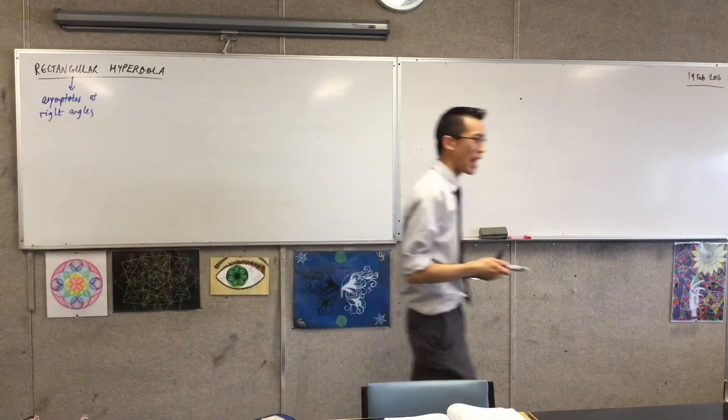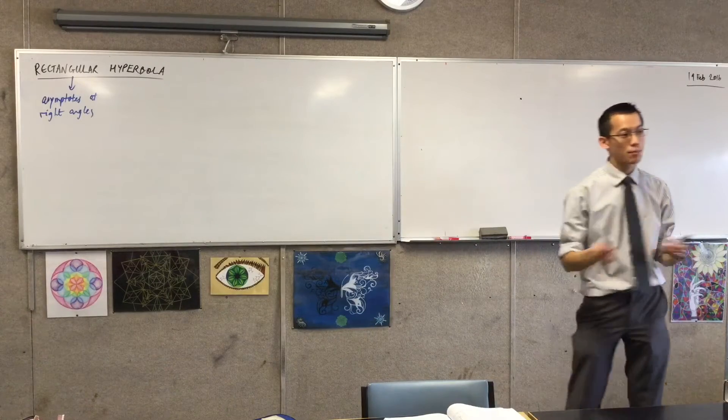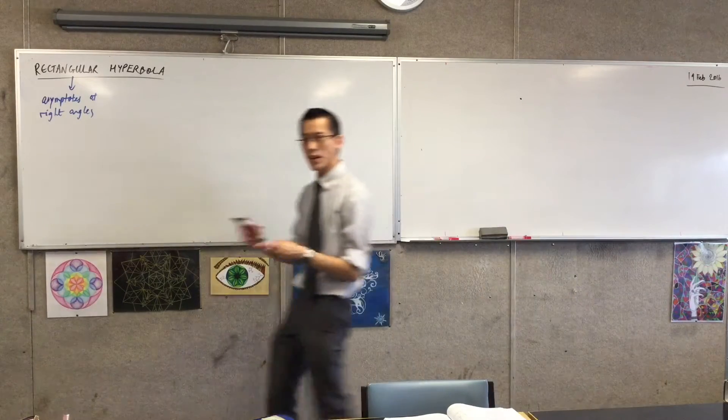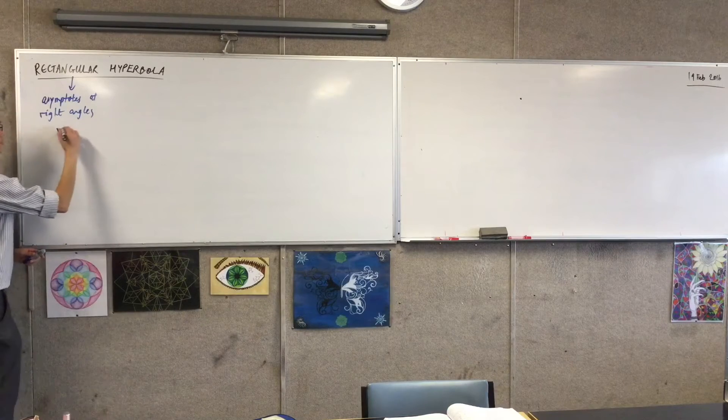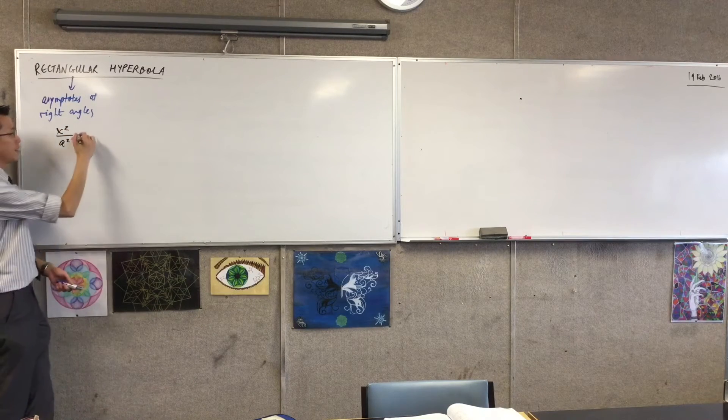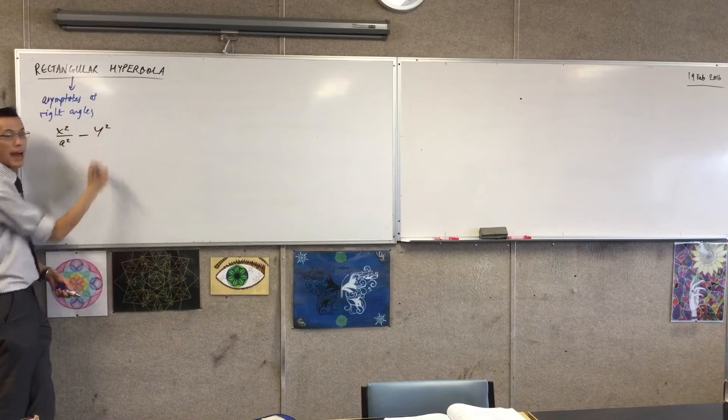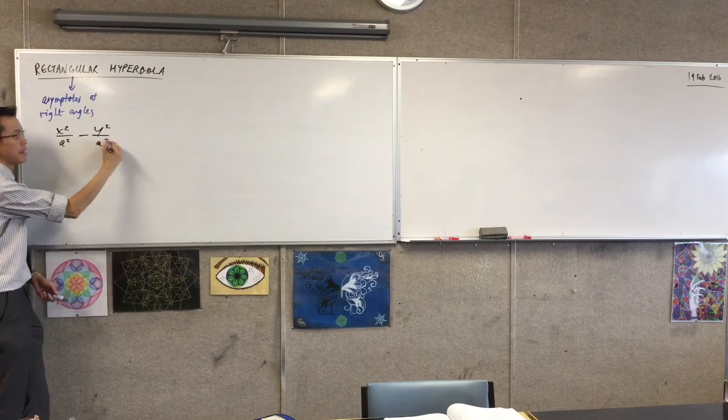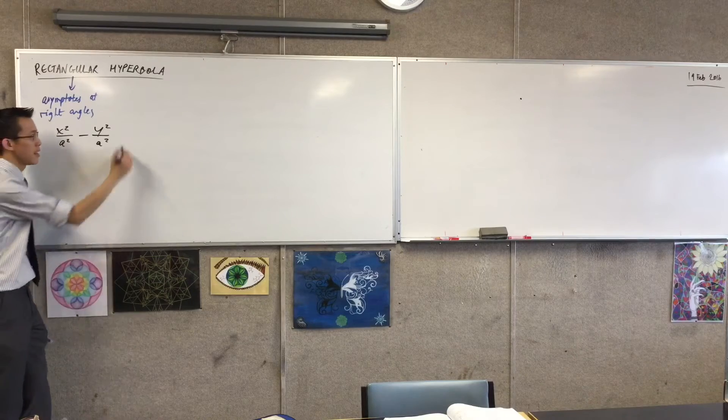So if you have the asymptotes at right angles, algebraically what that means is that instead of x squared on a squared minus y squared on b squared, we're going to have a and b being identical.